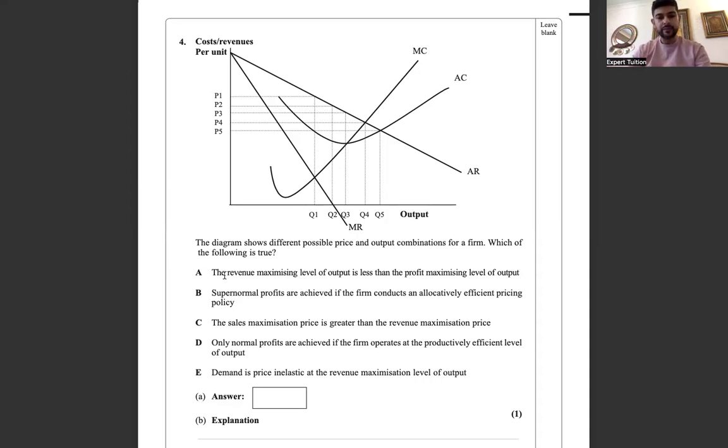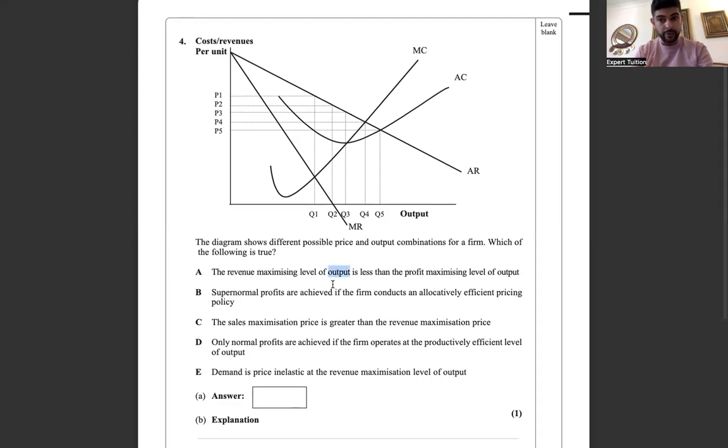It says A, the revenue maximizing level of output - underlining the word output is really important to recognize that it's asking about output and not price - is less than the profit maximizing level of output. Okay. Let's see. Well, we know that revenue maximization is where MR equals zero. So the output level for revenue max is Q2. And profit maximization, you should know, is where MC equals MR. MC equals MR is right there. It's Q1. Is that true or false? Well, clearly that is false. So it's not A. And we proved that it's not A through theory.